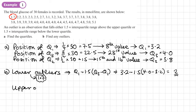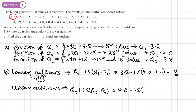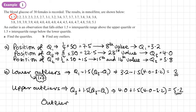Now let's find any upper outliers — any values that look too big. That's Q3 plus 1.5 times the interquartile range: 4.0 plus 1.5 times (4.0 minus 3.2), which gives 5.2. Are there any values bigger than 5.2? No. So there are no upper outliers. The only outlier identified is 1.7.